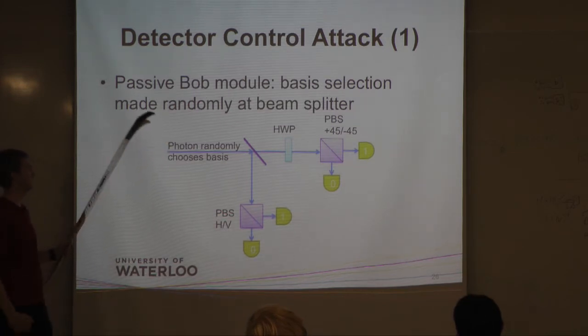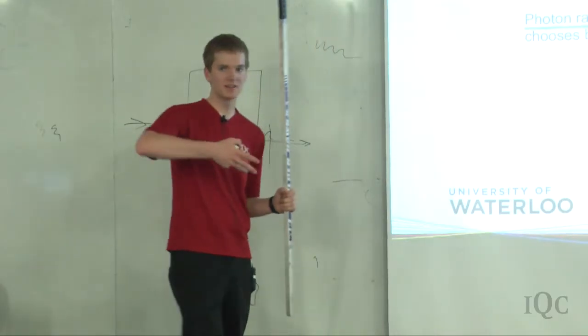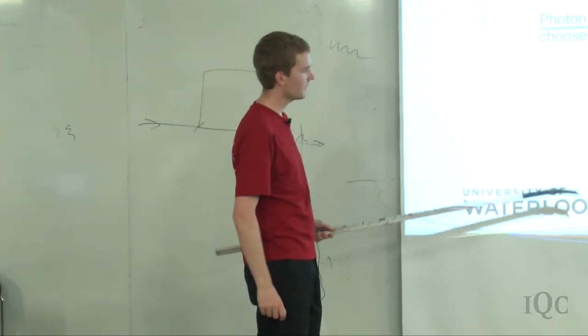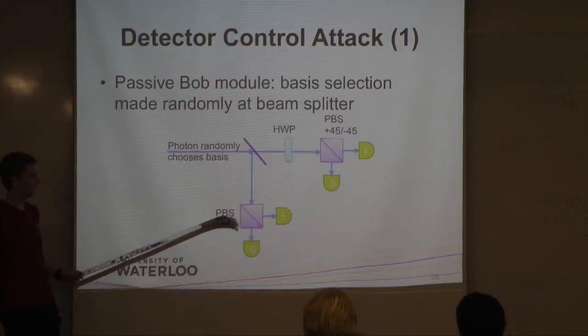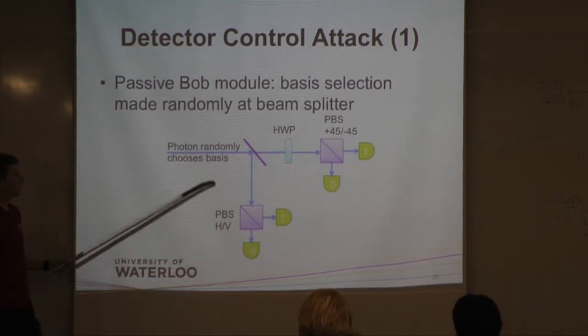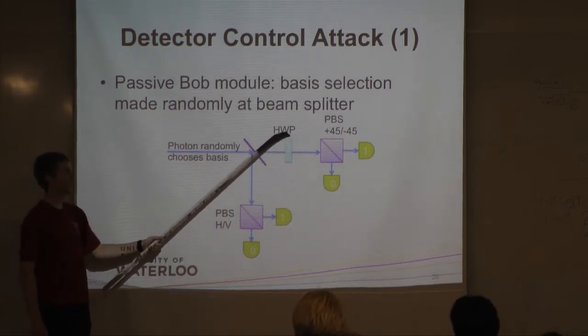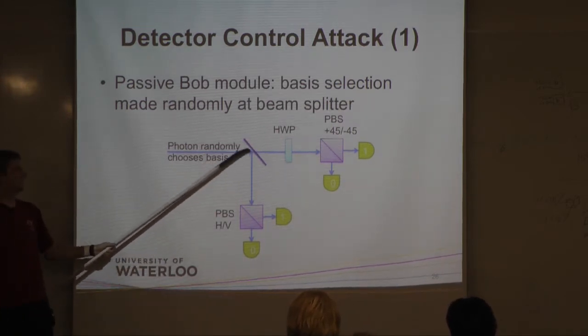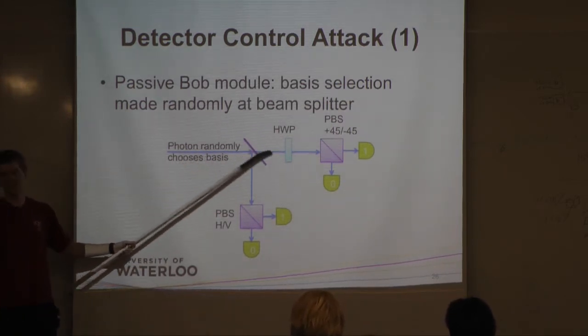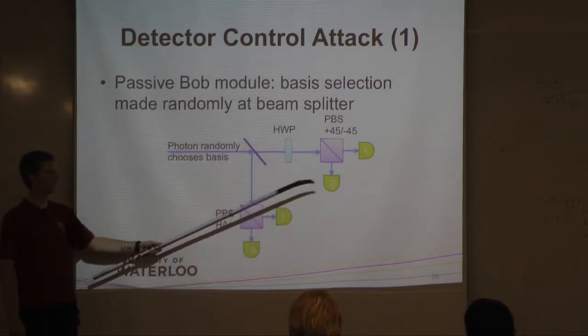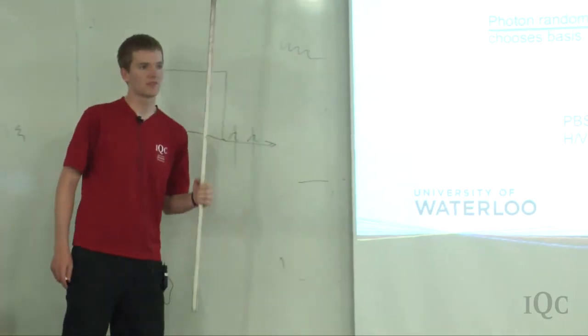I'll just go through how this attack works. So instead of the Bob module I showed earlier where he has this wave plate to rotate the incoming light, let's look at a passive Bob module. So this means there's the PBS's and they measure, this one measures in the HV basis, so it can decide between the 0 and 1 in this basis. Then sometimes the photons go over here and then get rotated. And then this measures in the 45 degrees basis. So the photon at this beam splitter essentially chooses which basis it's going to be measured in randomly. So it's not Bob choosing. The photon chooses it randomly. But that's sufficient because he can tell which basis it was and he can tell which number it was.